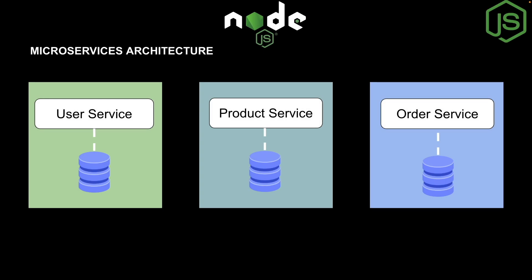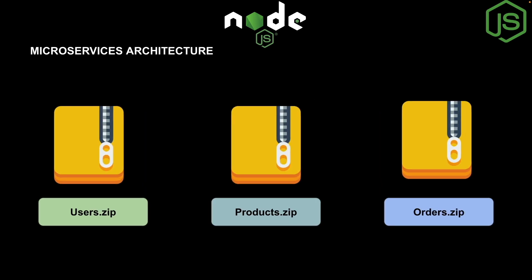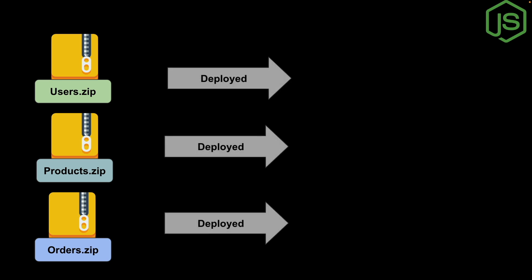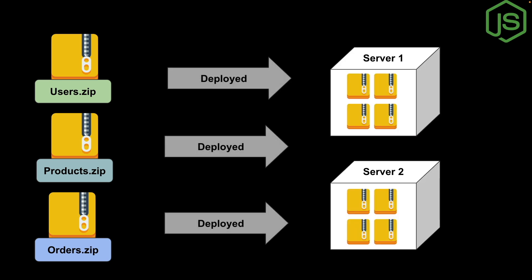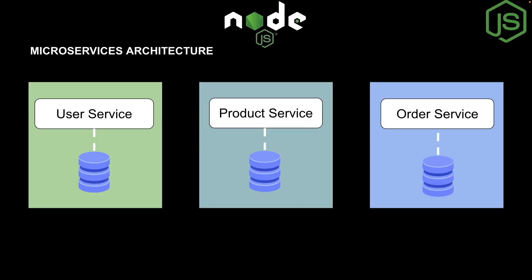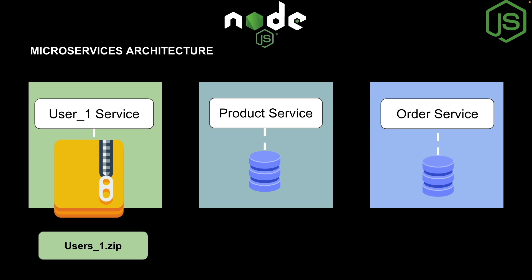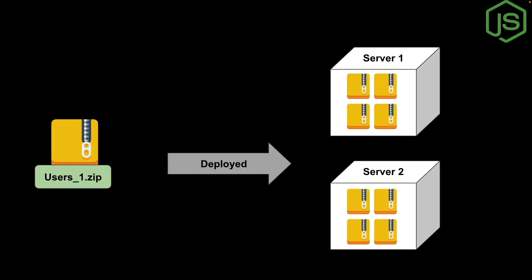To deploy microservices, each service is deployed individually with different pipelines — we create separate artifacts: user zip, product zip, and order zip, all independent of each other. If there are changes only in the user service, we only create and deploy a new zip for the user service; product service and order service don't need to be redeployed. This provides great flexibility — you don't need to bring down the entire application and there's no single point of failure.